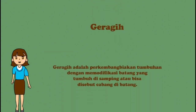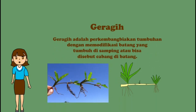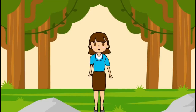Yang terakhir, geragih. Geragih adalah perkembangbiakan tumbuhan dengan memodifikasi batang yang tumbuh di samping, atau bisa disebut cabang di batang. Contoh tumbuhan yang berkembang biak dengan menggunakan geragih atau stolon antara lain stroberi, rumput teki, dan pegagan.